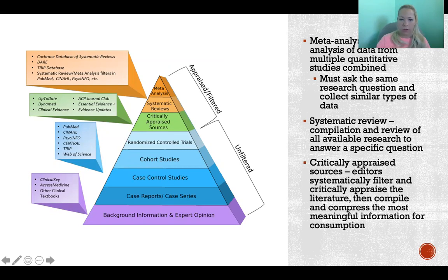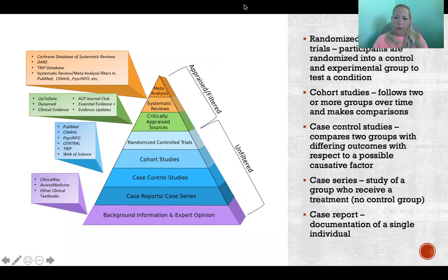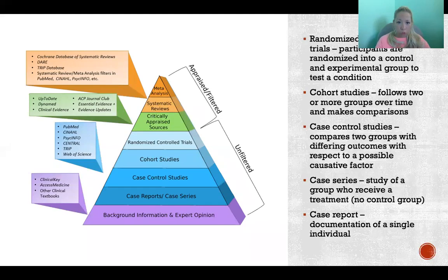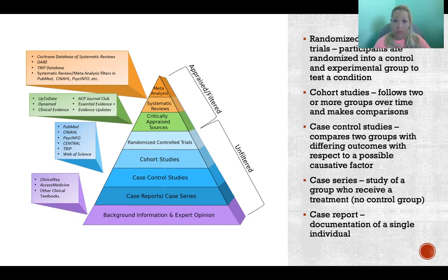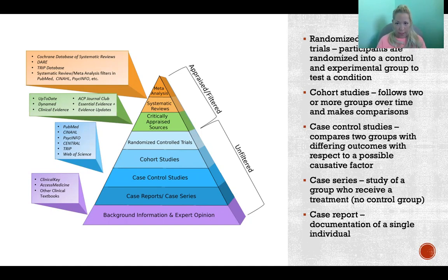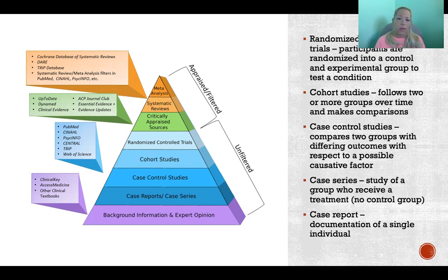After that would be randomized controlled trials. A randomized controlled trial is one study — that's the key difference from the tip of the pyramid, where those first three levels look at multiple studies. Once we get to randomized controlled trials, we are looking at one study at a time. A randomized controlled trial is the best we can do when considering one study: participants are randomized into a control and at least one experimental group to test a condition — some kind of exposure or treatment that the experimental group receives, compared to a control group.